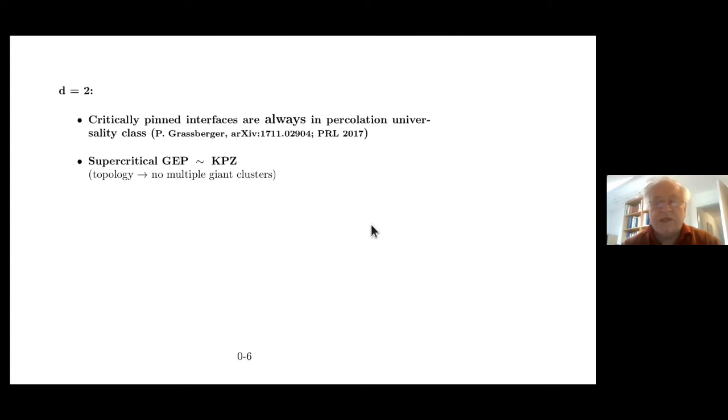Let me see what we get in two dimensions. As I said, it will be very brief. And indeed, the situation is much simpler than what was conceived by most people. Namely, critically pinned, so at the critical point, the interfaces are always in the percolation universality class, although there are lots of papers who claim differently. And the supercritical interfaces are always in the KPZ class. The point is, the problem which we'll talk just next, namely that there are multiple giant clusters can't happen in two dimensions because of topology.